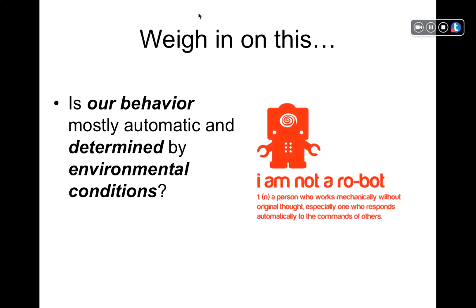Is our behavior mostly automatic and determined by environmental conditions? The behaviorist tradition views the human person as being primarily a product of their environment — that most of our behavior is learned and we learn through interaction with our environment.